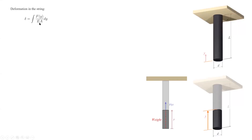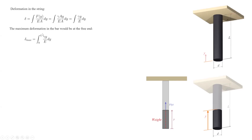Deformation is the integral of F divided by EA. E and A in this problem are constants — there is no variation in cross-section area or modulus of elasticity. Force is gamma multiplied by A multiplied by y. A cancels out in the fraction, and that simplifies to the integral of gamma y divided by E. The maximum deformation occurs when we integrate over the entire length from 0 to L. Gamma and E are constants, so they come out of the integral. The integral of y dy is y squared over 2, and from 0 to L that equals L squared over 2.